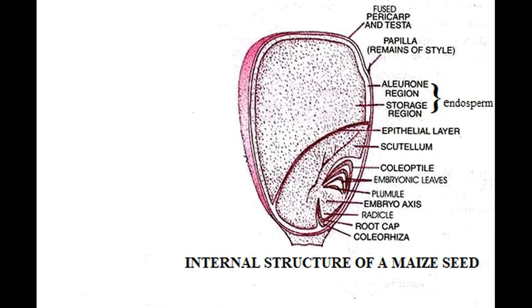Next we have the aleurone layer. It is a single layer of cells just inside the seed coat that surrounds the endosperm and embryo. Upon germination, enzymes are secreted by the aleurone. The enzymes degrade the stored carbohydrates, proteins, and lipids. The products are absorbed by the scutellum and transported to the developing embryo.